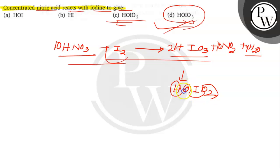So the correct answer for this question is option number C, that is HOIO2, that is option number C. I hope you understood it well. Best of luck!